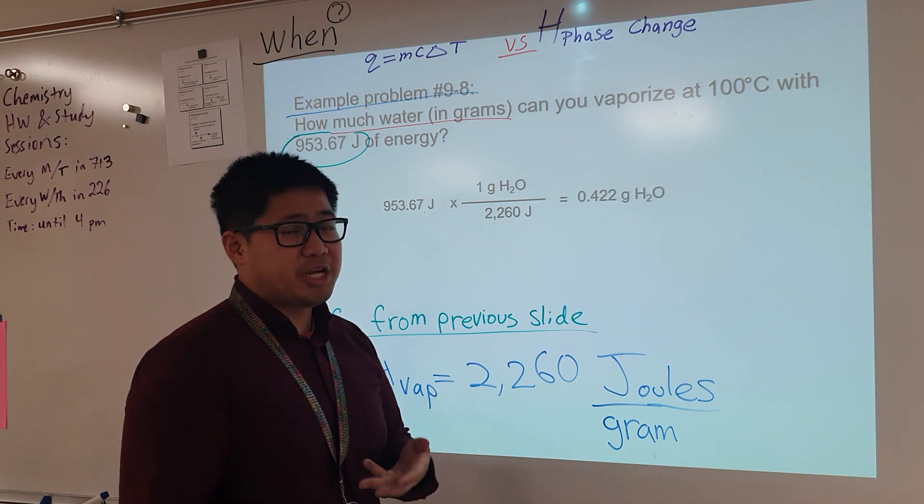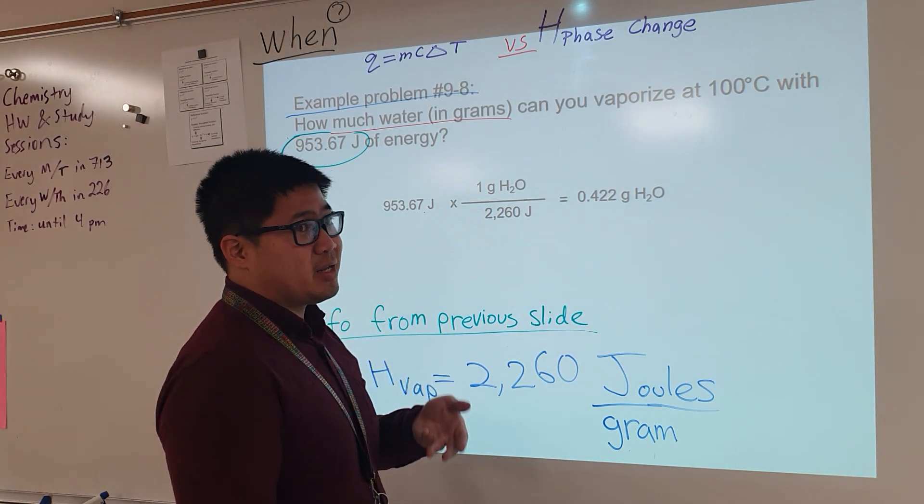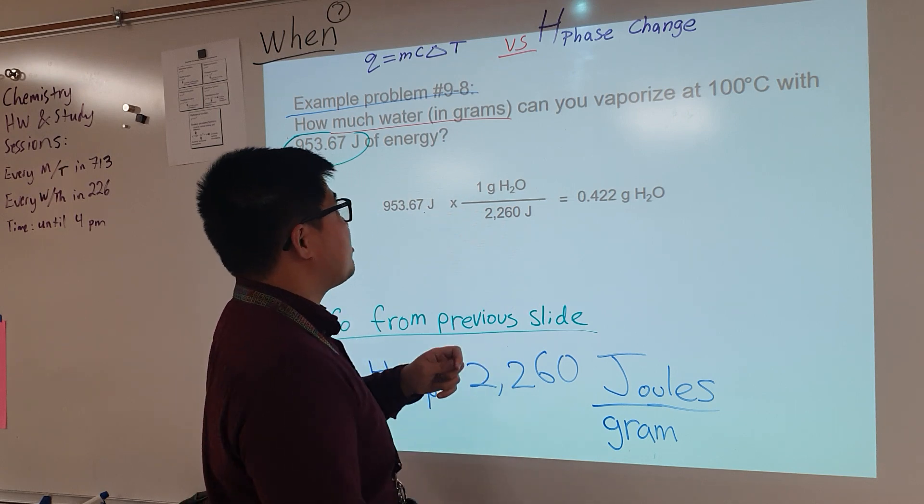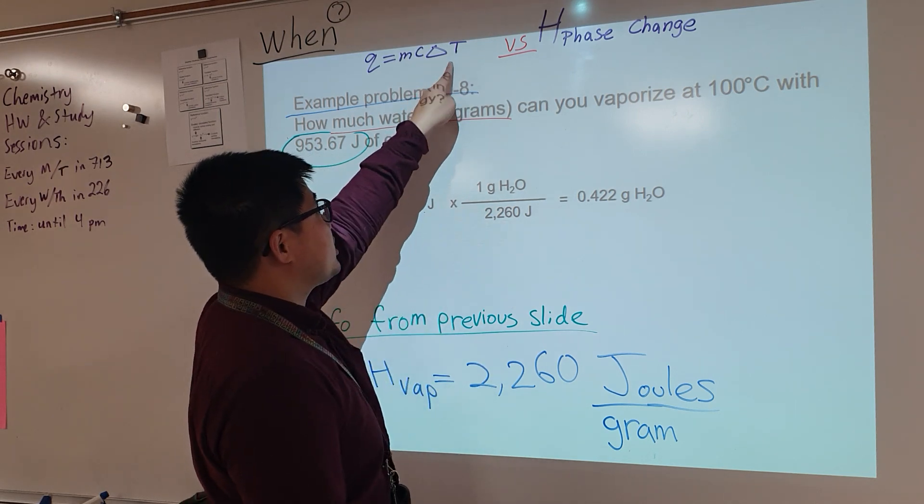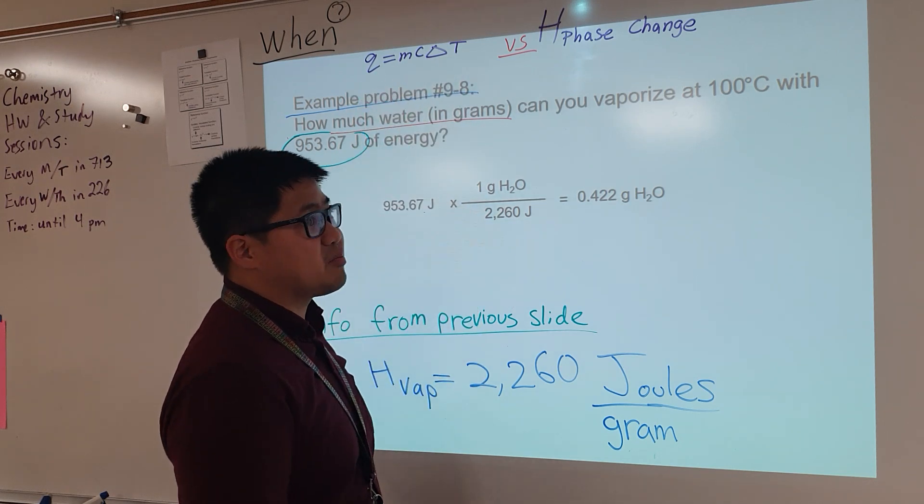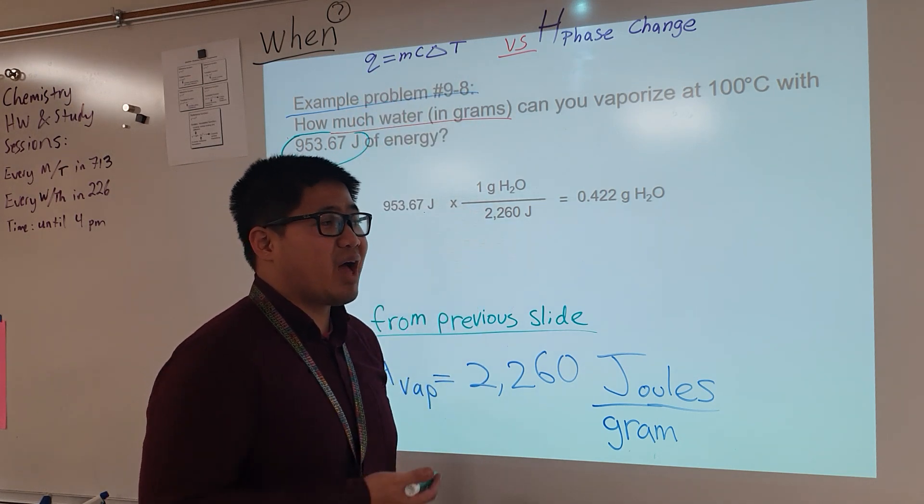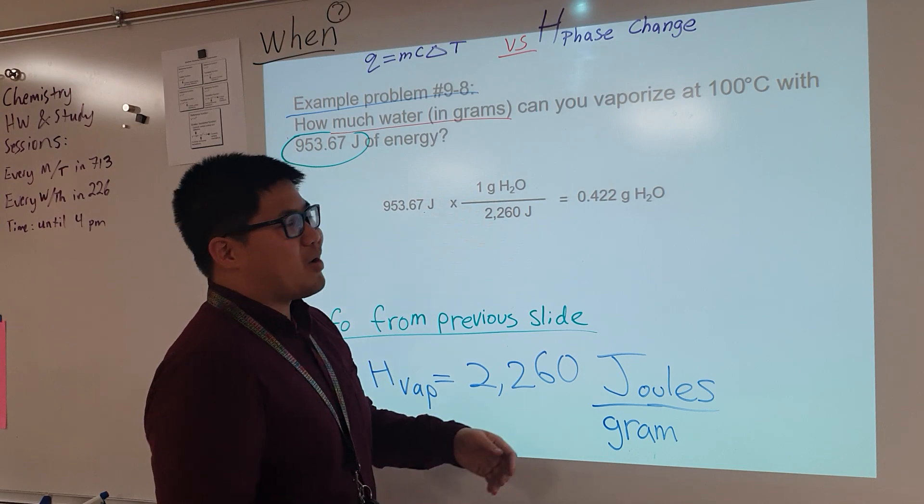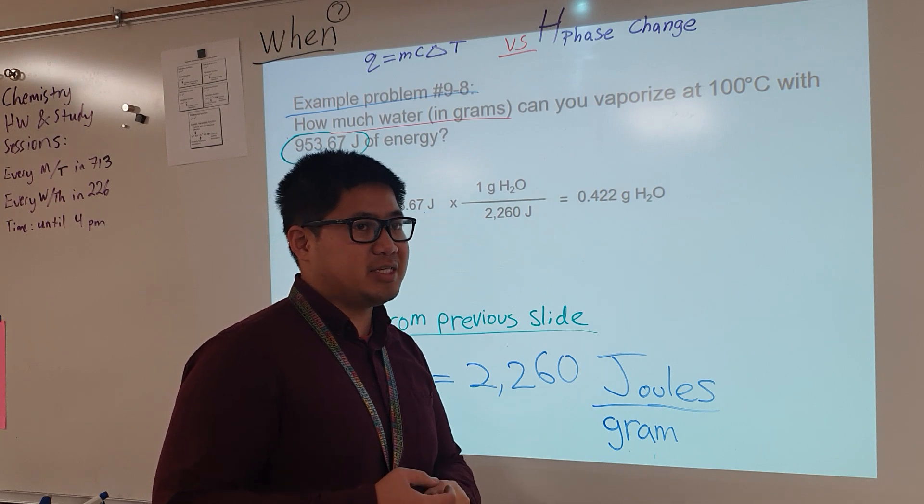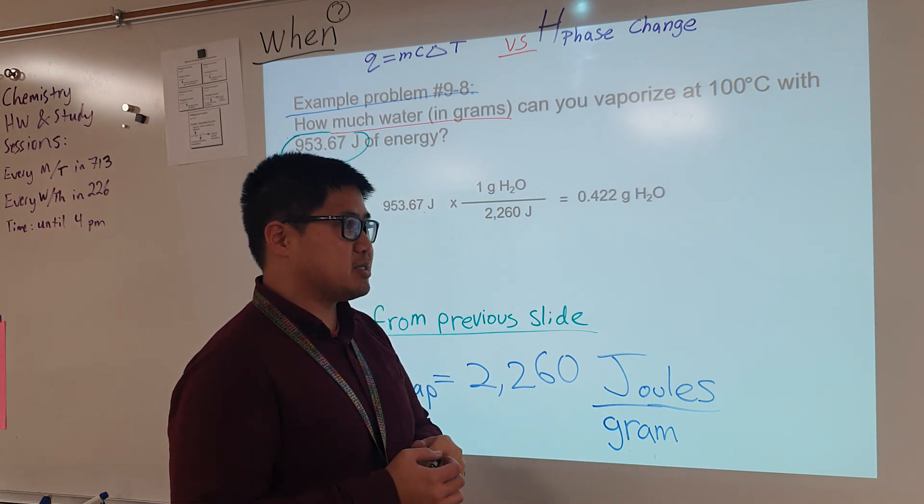Well, if there's no change in temperature, that would mean a delta t, a change in temperature, of zero. A flat out zero. Nothing. And if we plug in zero and we do the math, multiply anything by zero, you would get zero. And that wouldn't get us anywhere. By default, we would have to do this. We would have to calculate this energy of phase transitions through dimensional analysis.